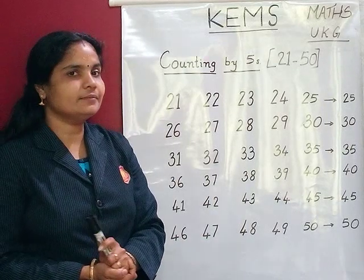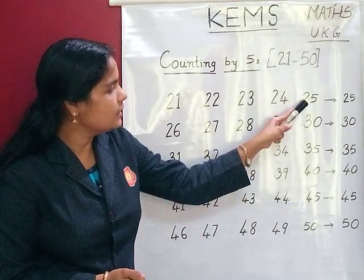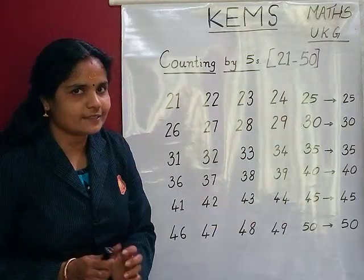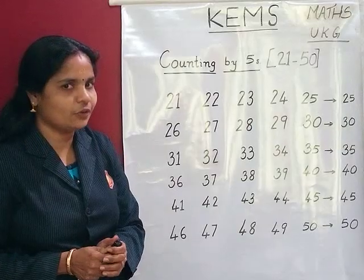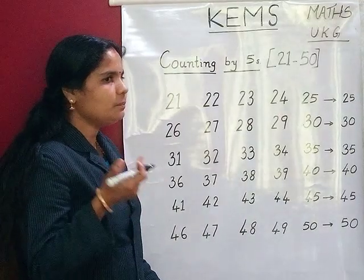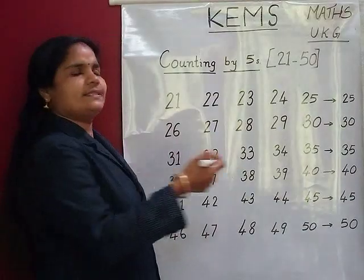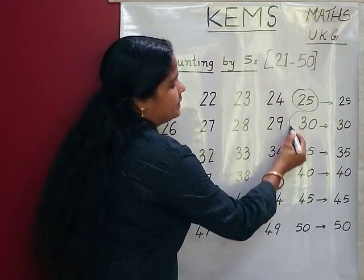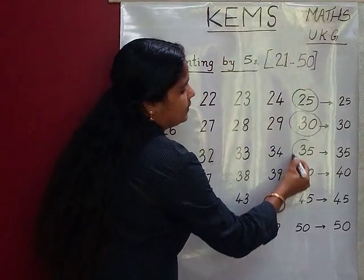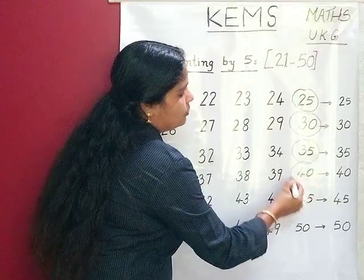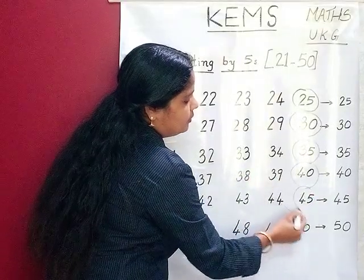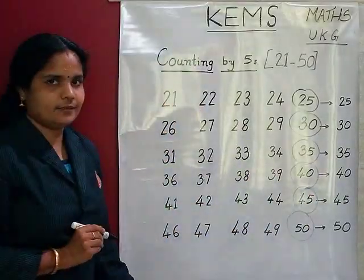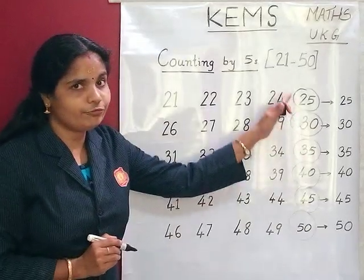So children, listen here. Look here. These are 5s. So children, count with me — count it by 5s: 25, 30, 35, 40, 45, 50. These are 5s.